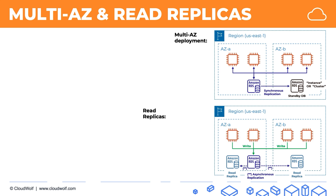Here are our EC2 instances — they still write into the main database, but when they need to read data, they can read from any of the read replicas or from the main database. So effectively, we're distributing the read workload. This is very useful for read-heavy applications, because relational databases don't scale well horizontally — they scale vertically — but at least we can scale the reading operations horizontally, reducing the load on the original, or source, database.